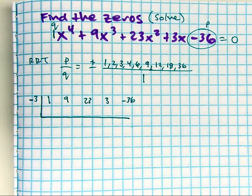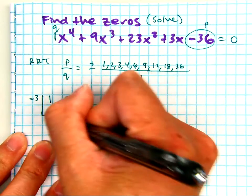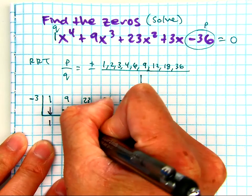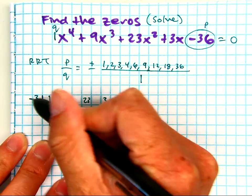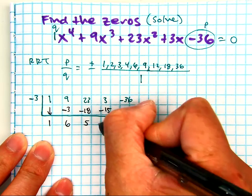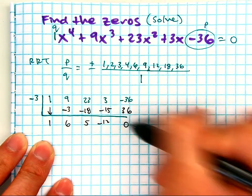Let's try. Bring it down, you got a 1, multiply, add, multiply, add, multiply, add, multiply, and I get a remainder of 0.